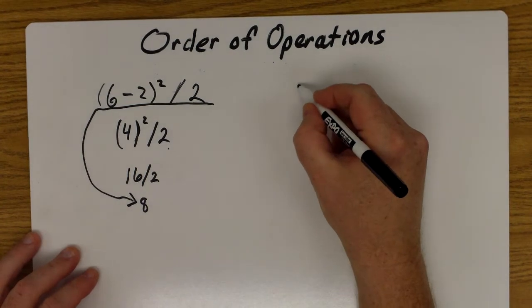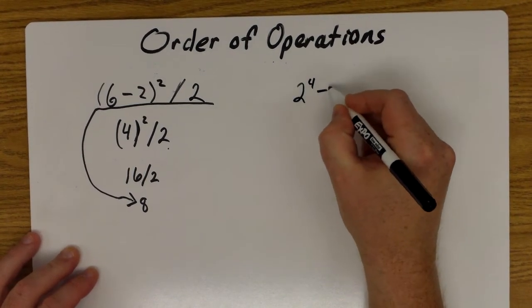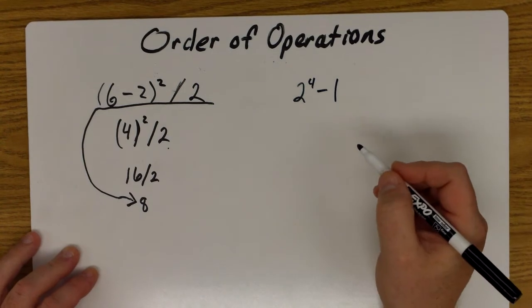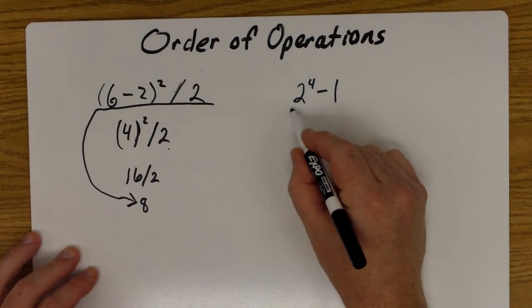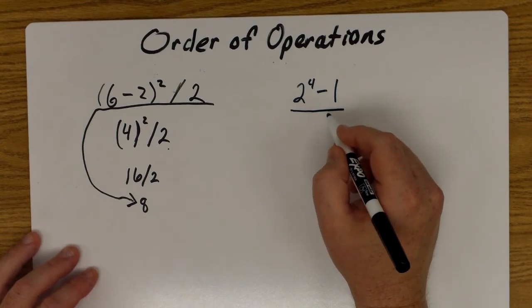We have another example here: two to the fourth power minus one, and we're going to divide that by five.